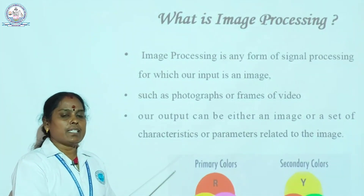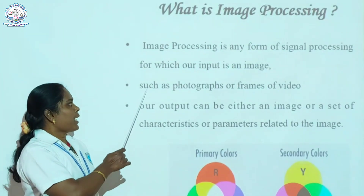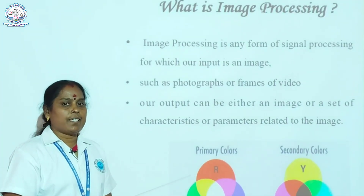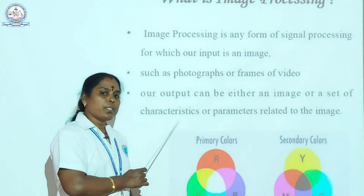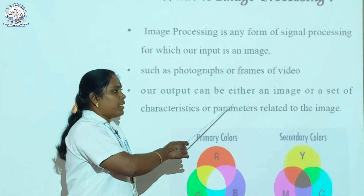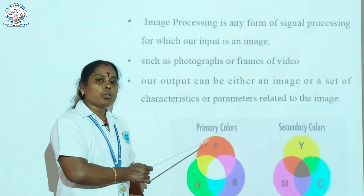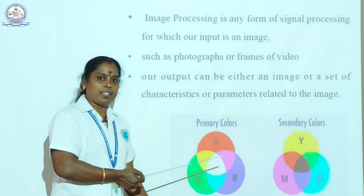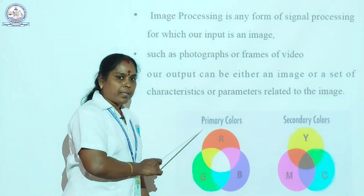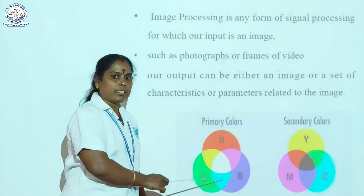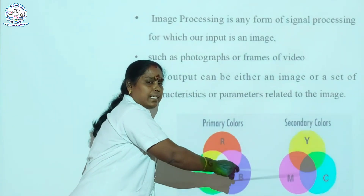First, what is image processing? Image processing is any form of signal processing in which the input is an image — we can produce photographs or frames of video. The output can be either images or a set of characteristics or parameters of the images. There are two types of colors used in images: primary colors and secondary colors. The primary colors are red, green, and blue. The secondary colors are yellow, magenta, and cyan.